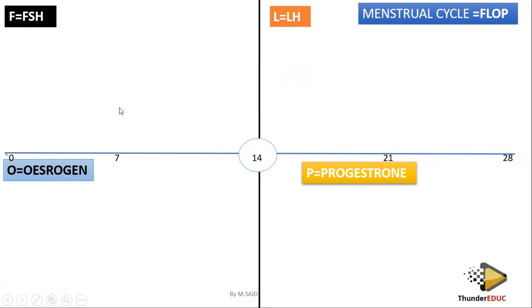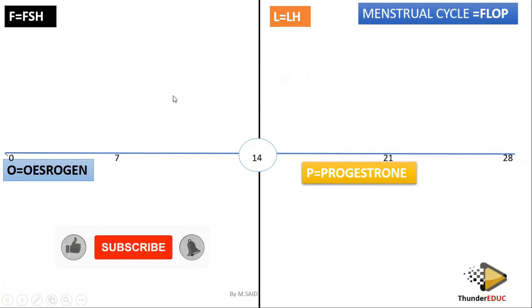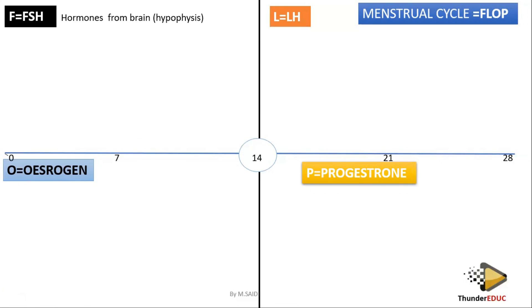Each hormone is going to be working in its own box. From there, you need to know where are they coming from — where are they being produced from? These two hormones — follicle-stimulating hormone and luteinizing hormone — are being produced from the brain, basically the hypophysis. Sometimes you call it the pituitary gland.